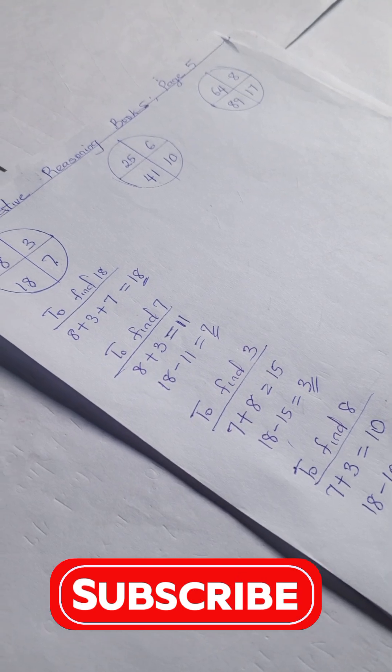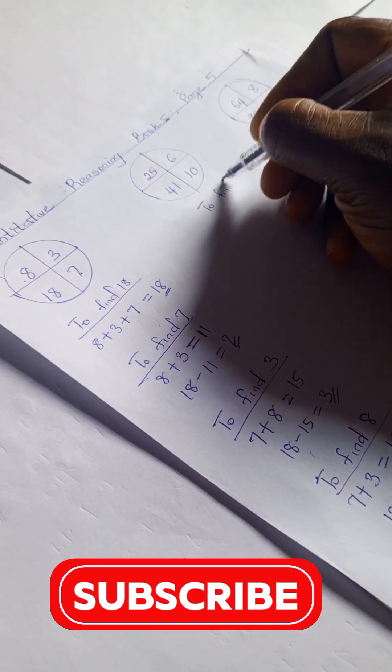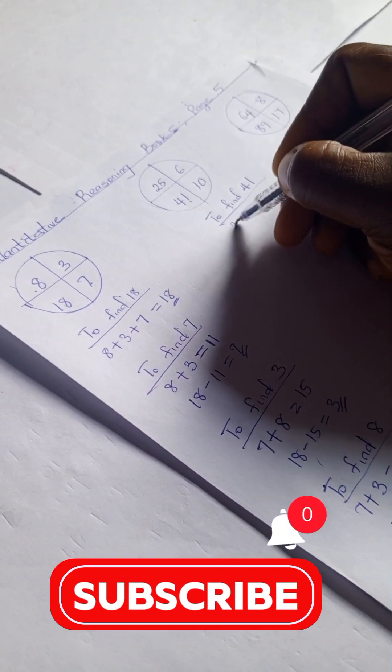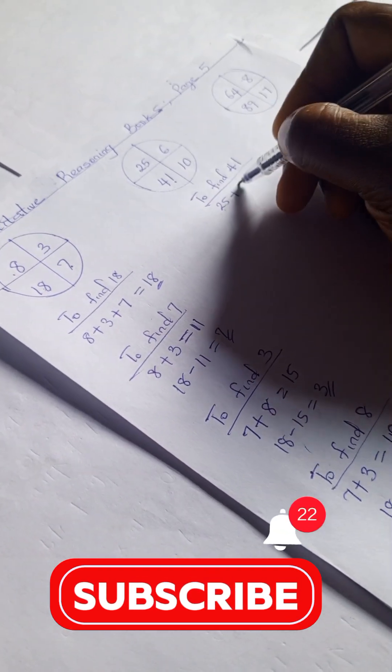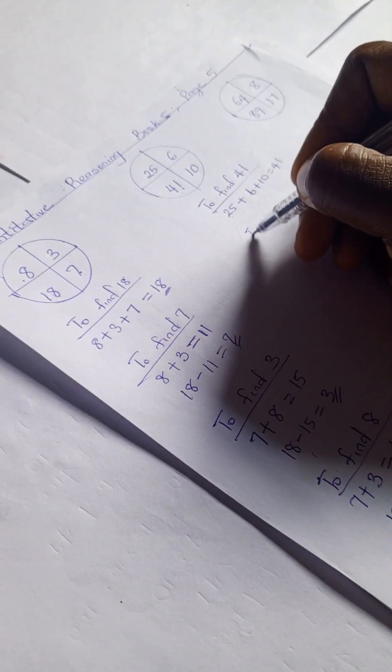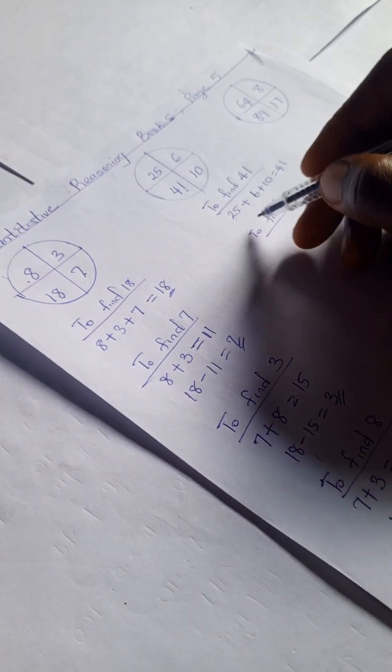So to find 41, this 41, we have 25 plus 6 plus 10 equals 41. To find 10, 5 plus 11, and we have 25 plus 7 plus 6.